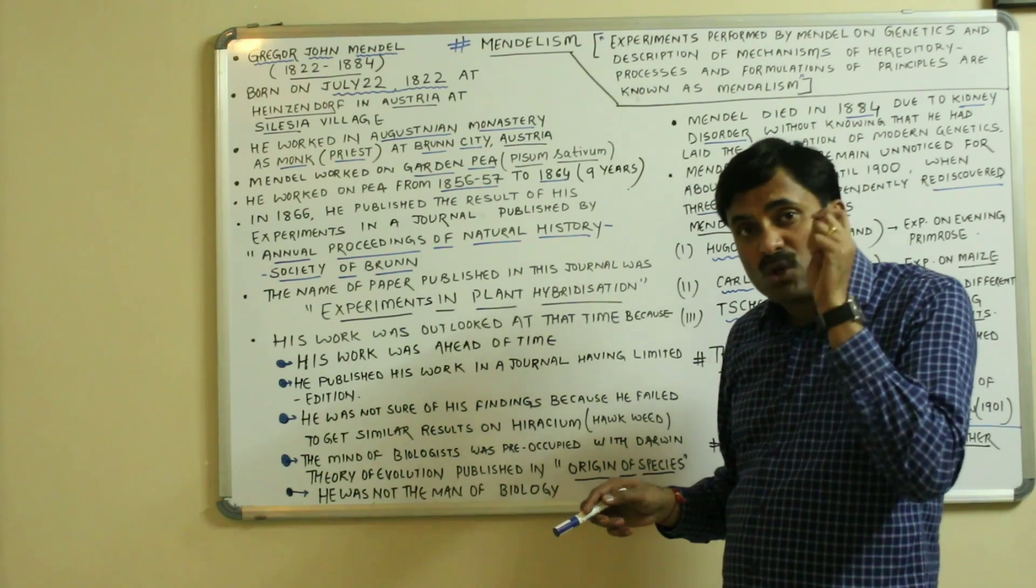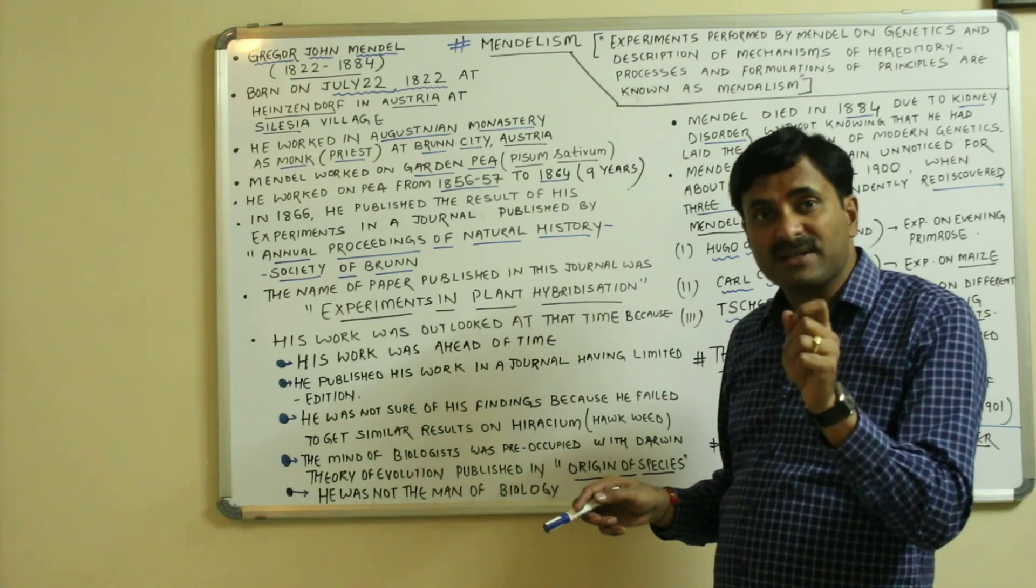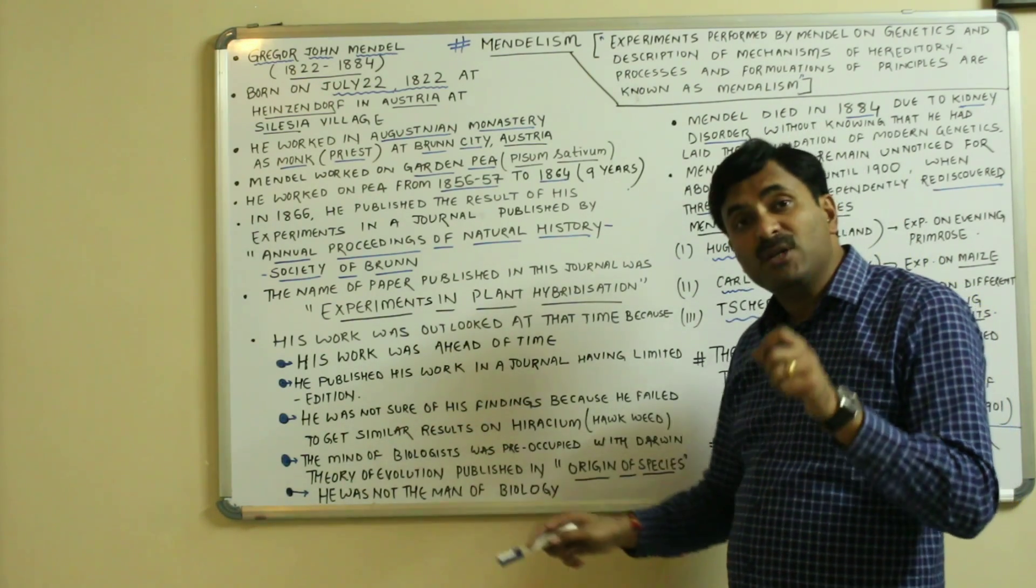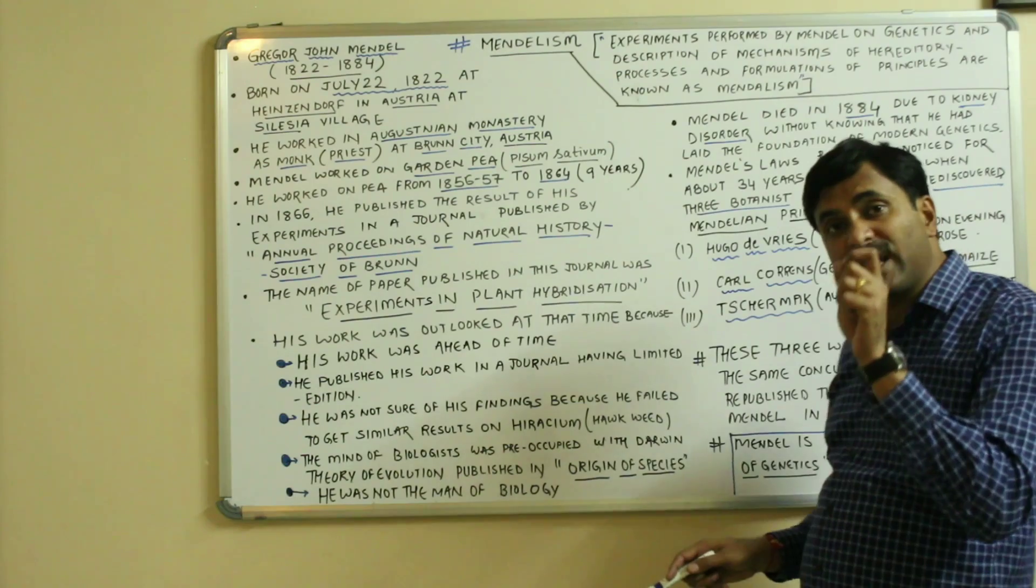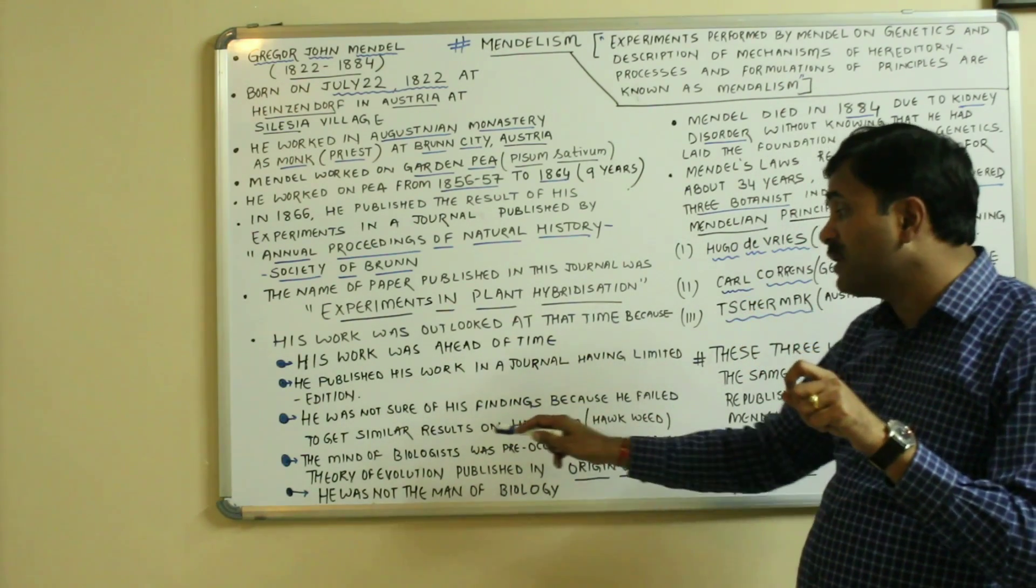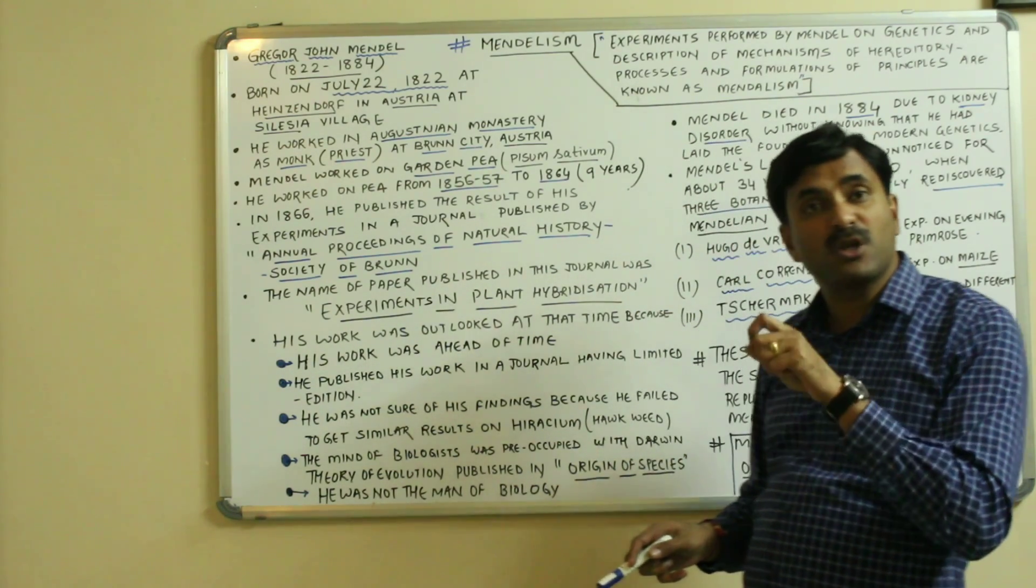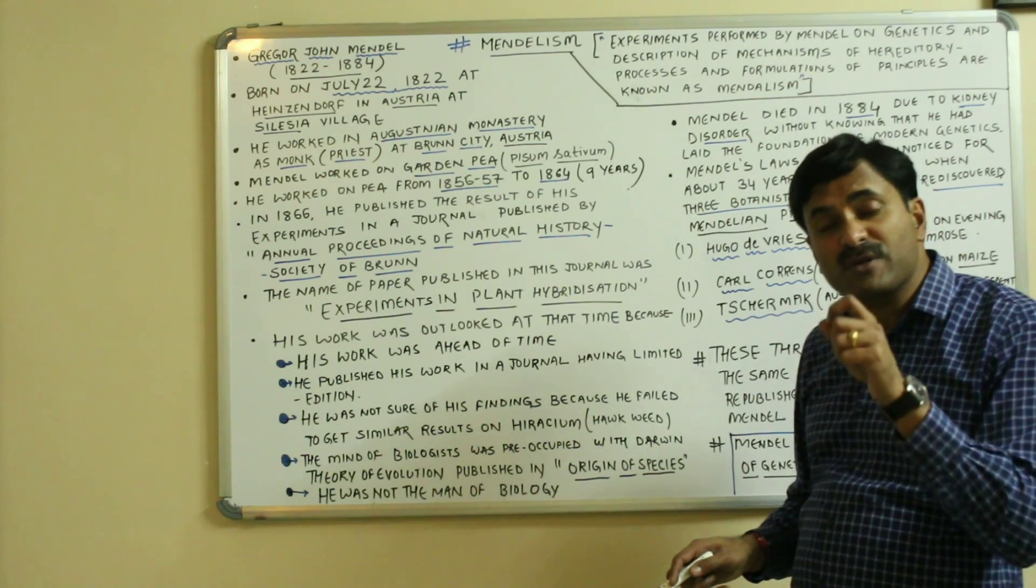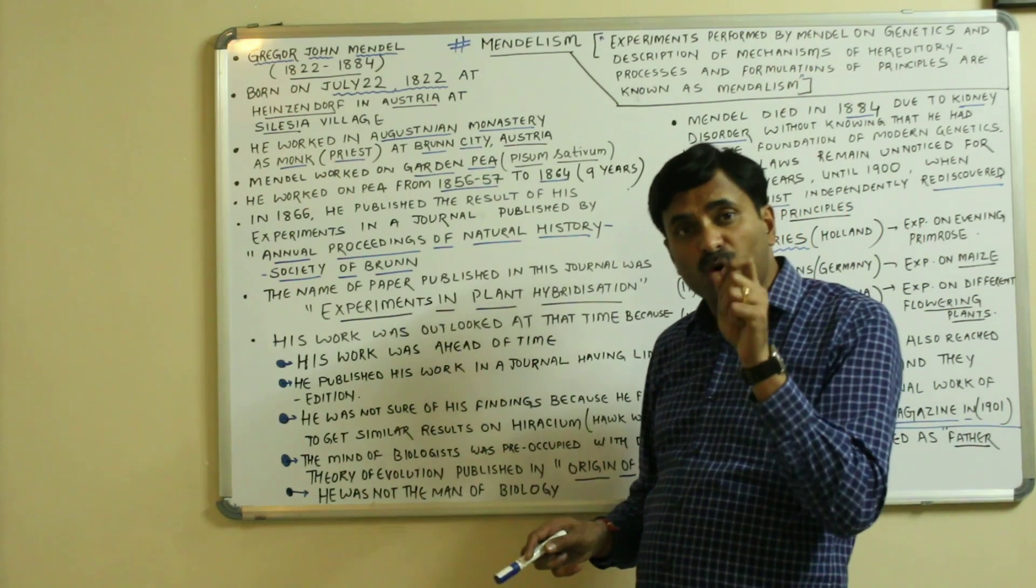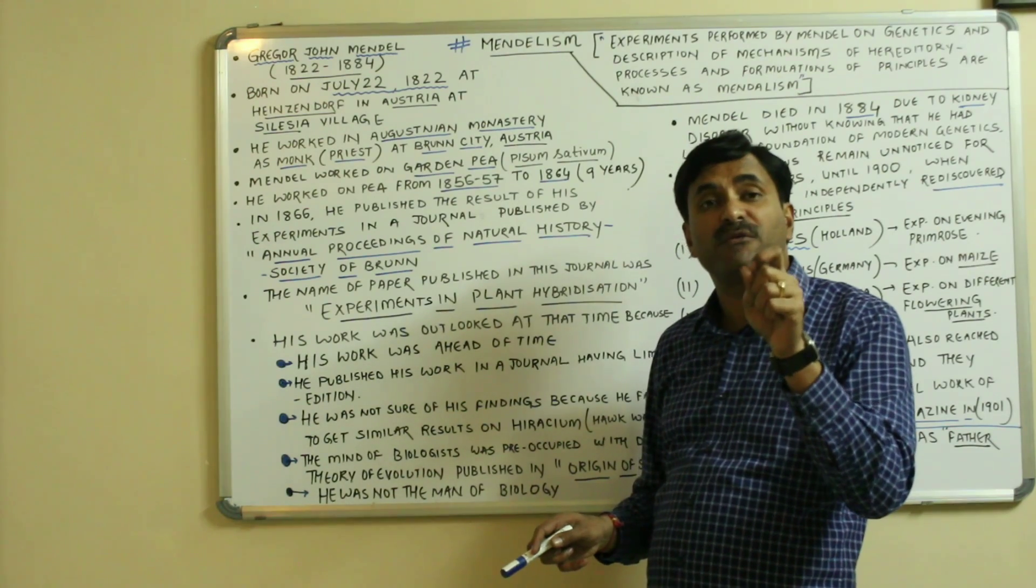Next one, the mind of the biologists of that time was preoccupied with Darwin's theory of evolution published in the book known as Origin of Species. Origin of Species was the most famous book at that time, which was published in the year 1859.